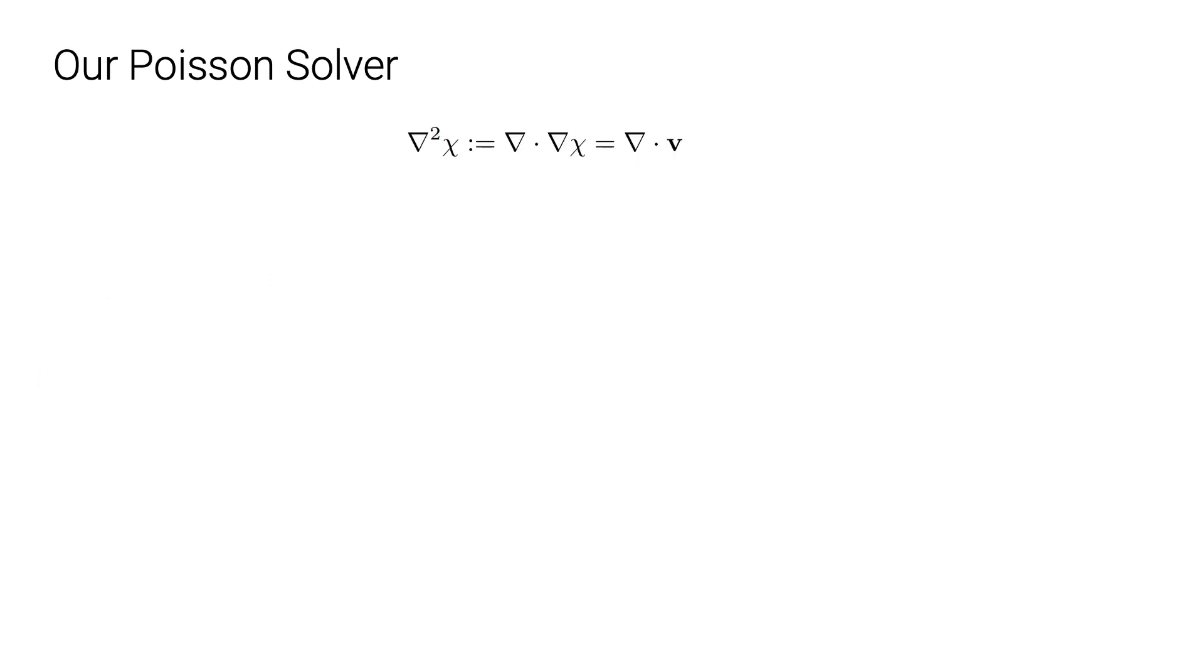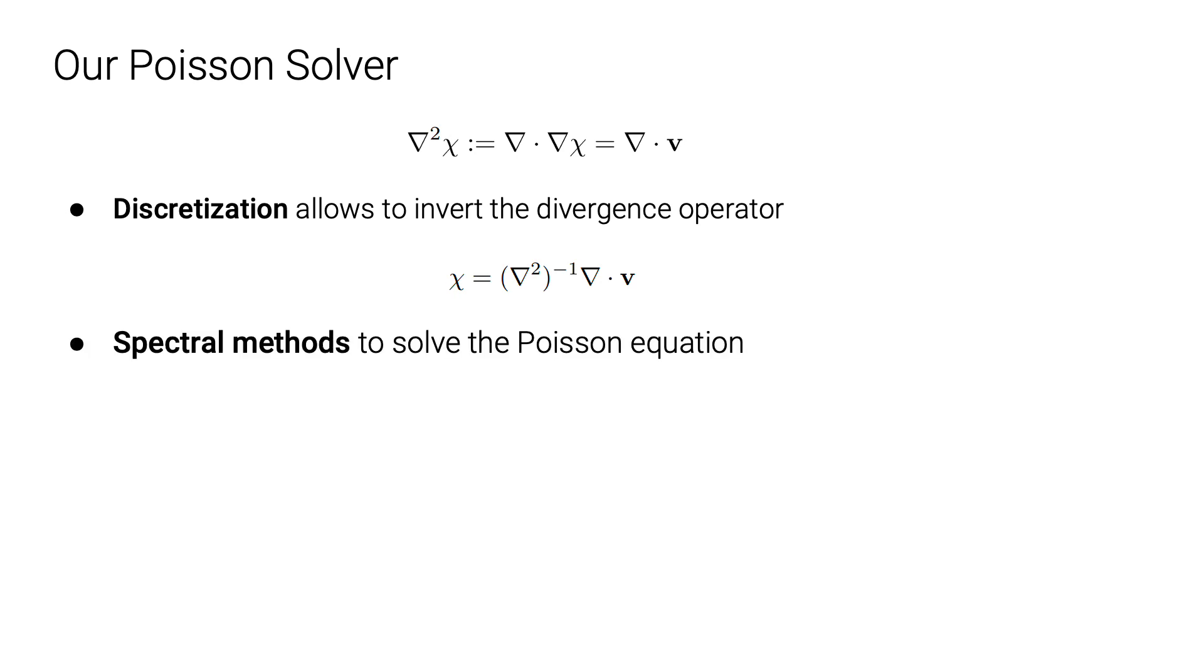To solve the linear Poisson equation, we discretize the function values as well as the differential operators. And we choose to use spectral methods to solve the Poisson equation, which decompose the original signal into a linear sum of sine and cosine basis functions, whose derivative can be computed analytically.